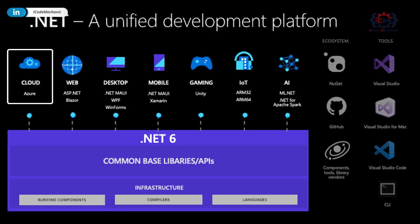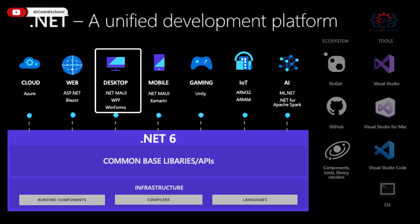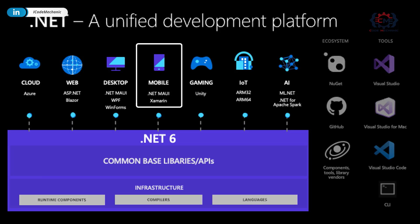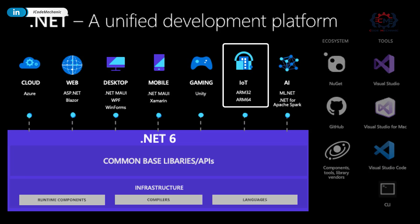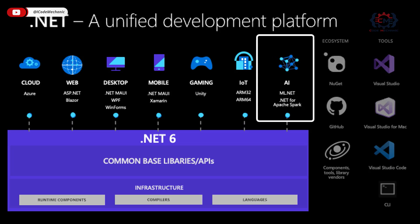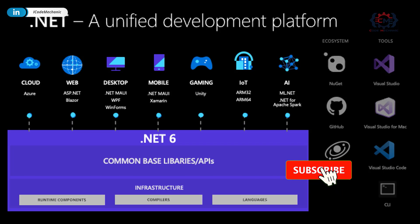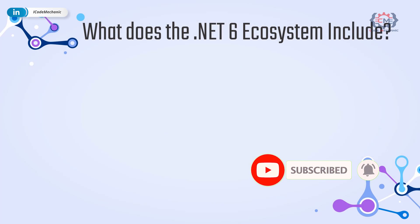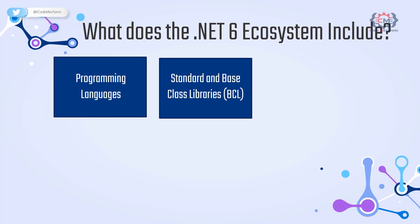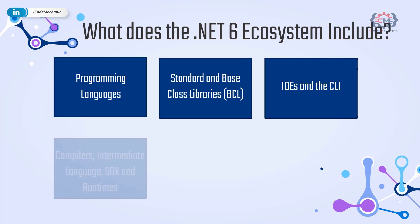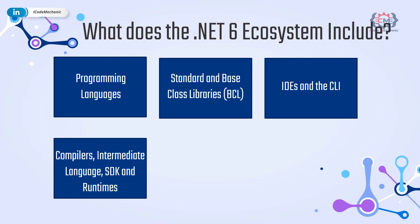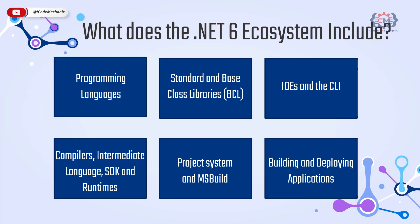Instead, we use functionality from the common base libraries. Our code gets compiled into an intermediate language that is translated and executed in one of the available runtimes specific to the target platform. This allows you to create cloud applications in Azure, websites using Razor Pages, ASP.NET MVC or Blazor, desktop development with MAUI, WPF and Windows Forms, mobile apps using Xamarin and MAUI, gaming with Unity, IoT for ARM32 and ARM64 architectures, and AI using ML.NET or .NET for Apache Spark. The ecosystem includes .NET programming languages, standard and base class libraries, IDEs and CLI, compilers, intermediate languages, SDKs and runtimes, project systems and MSBuild, and building and deploying applications.